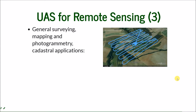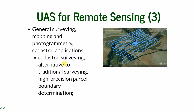There is also general surveying, mapping, and photogrammetry for cadastral applications. All spatial uses of UAS start with general surveying, and then you can apply those results to different areas — a multitude of applications. This cadastral surveying can be used as an alternative to traditional surveying and high-precision parcel boundary determination. Although there are still many questions about precision and suitability for safety purposes — for example, if you measure your parcel to build a house, you would need higher precision than if you are just monitoring road development progress.